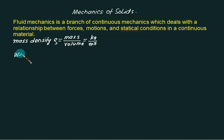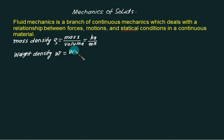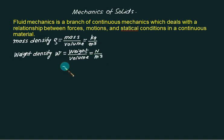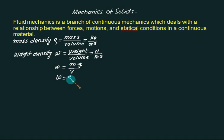The second is weight density, similar to mass density. Weight density is represented by lowercase w and equals weight divided by volume. The unit is Newton per meter cube. Basically, weight is defined as mass times g divided by volume. So mass upon volume is density itself, meaning specific weight is given by rho multiplied by g.